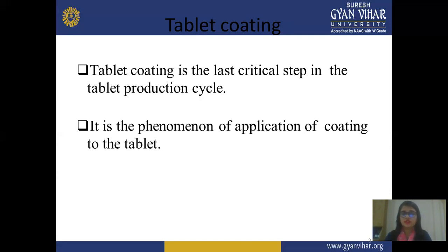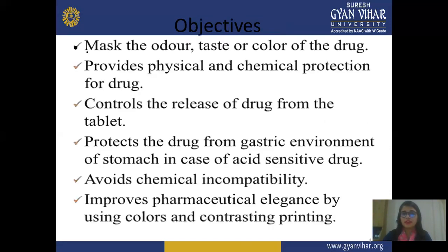Next is the phenomena and application of coating to tablets — why this coating is important and how to perform the coating procedure. In this, the first objective is to mask the odor, taste, and color of the drug. Suppose some drugs have bad odor or bad taste; in this condition, you improve the color, taste, or odor of the drug with the help of this coating. When you apply this coating layer or polymer coating, the color and taste of that particular tablet get changed.